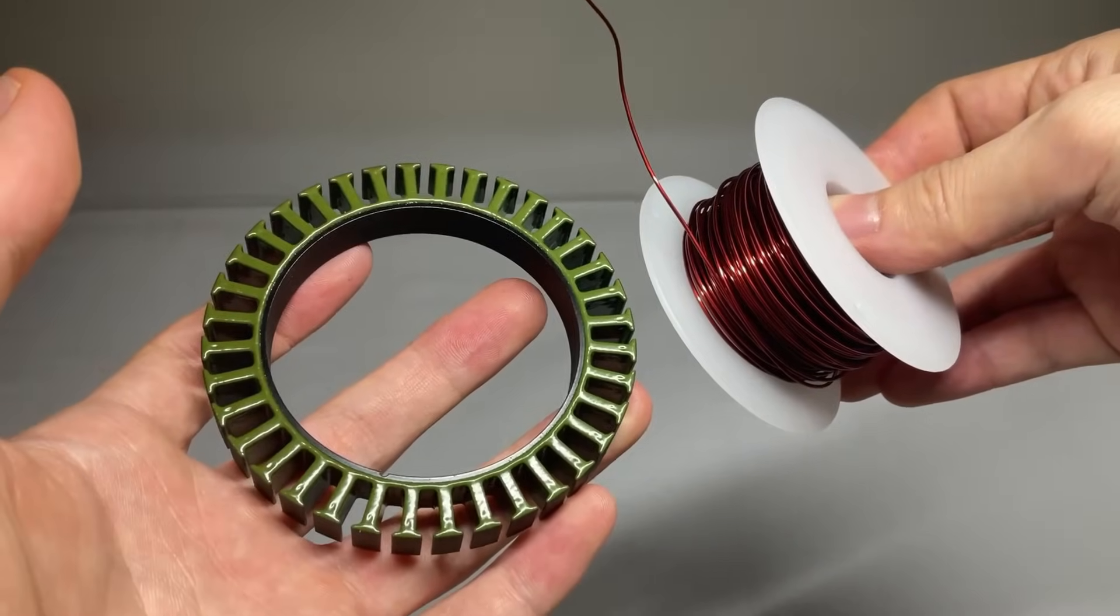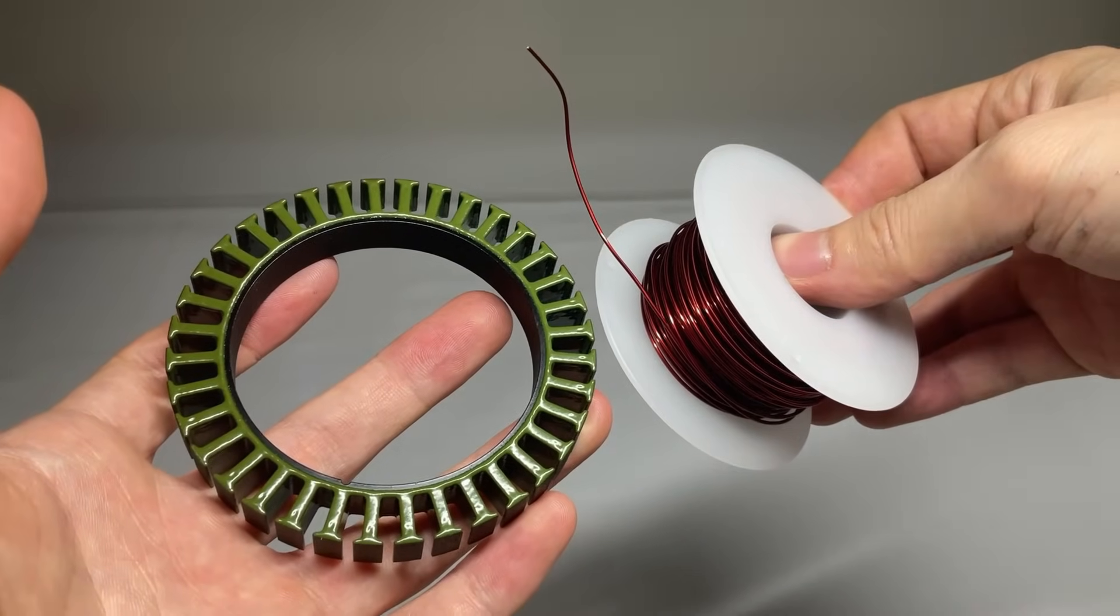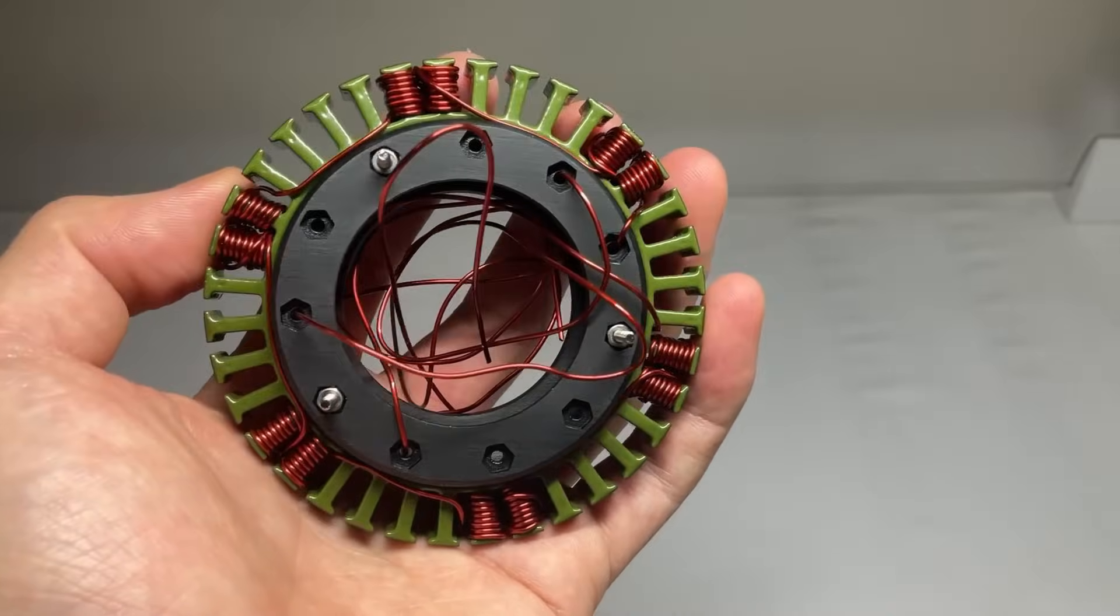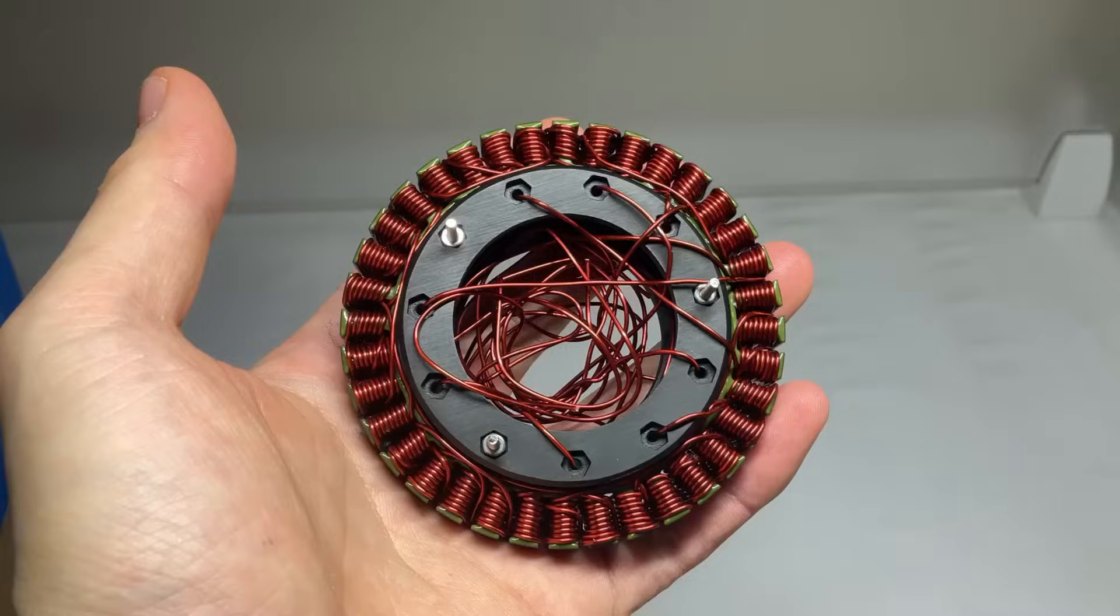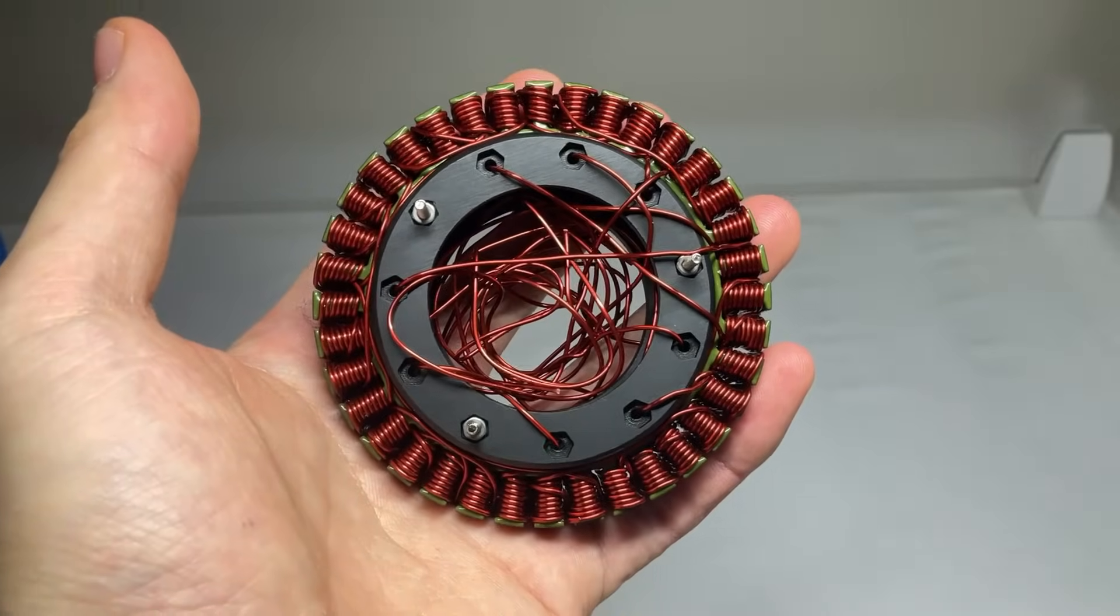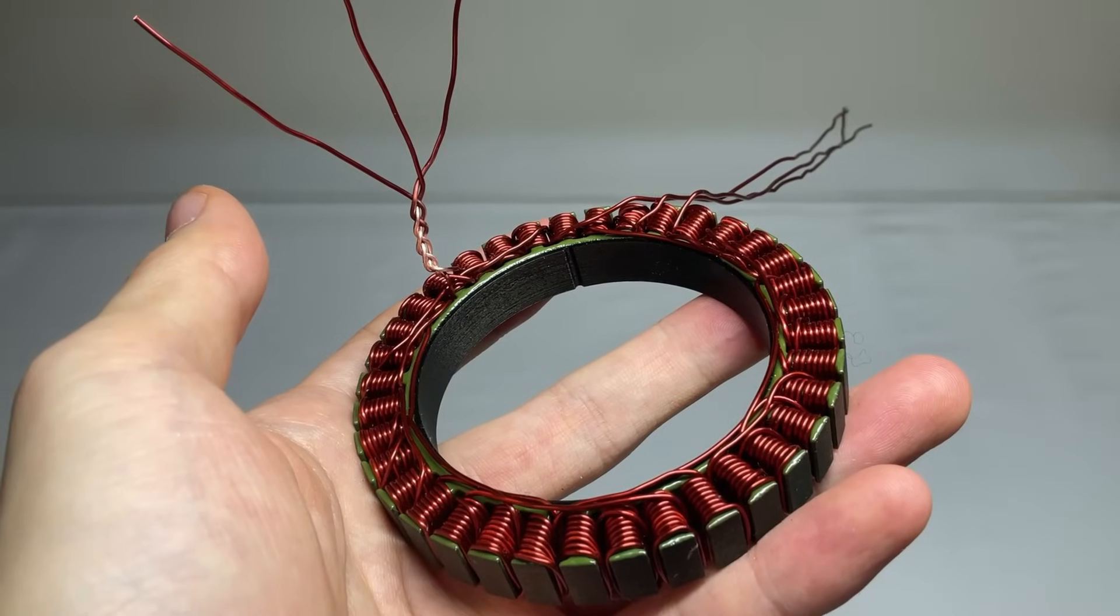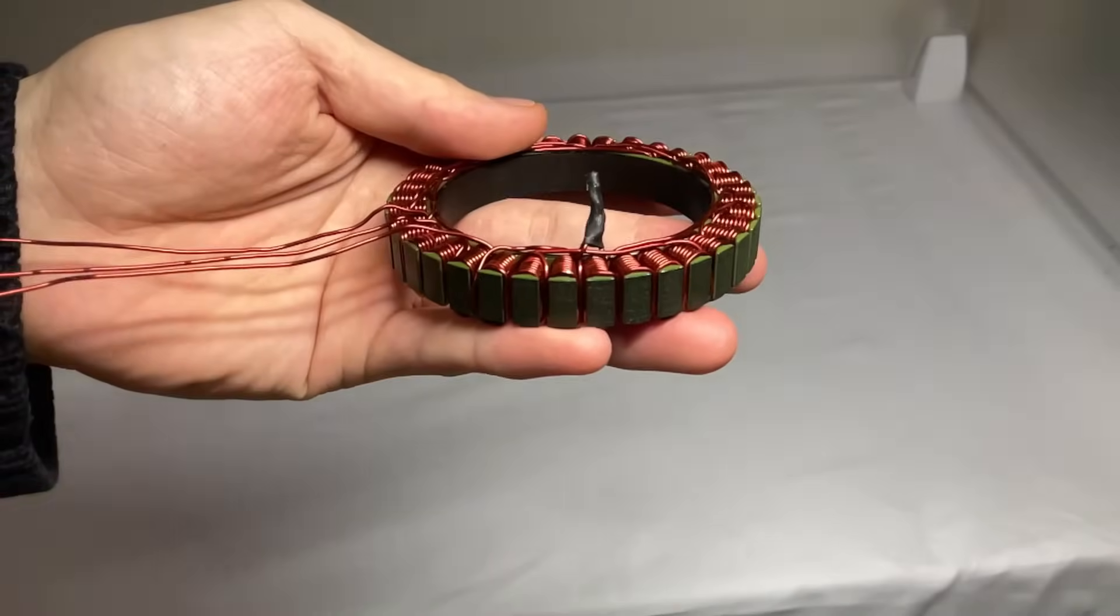Next, I'll wind a 20 AWG coil onto a stator that has 36 slots. There's a specific pairing between the number of permanent magnets on the rotor and the slots on the stator, and having more poles and slots generally makes rotation smoother. I'm using a star winding for this setup.